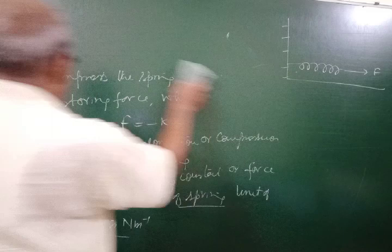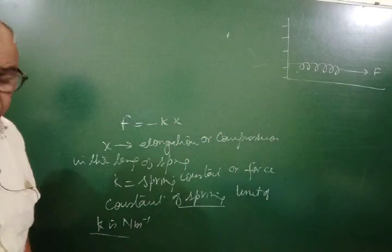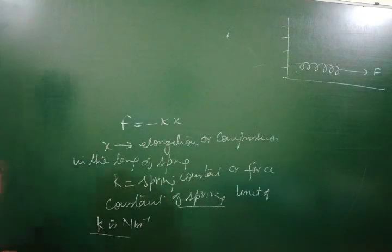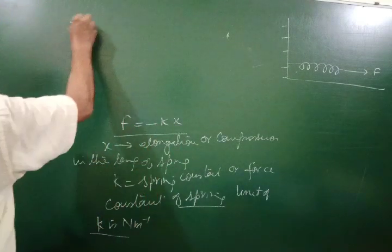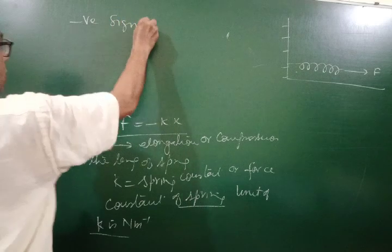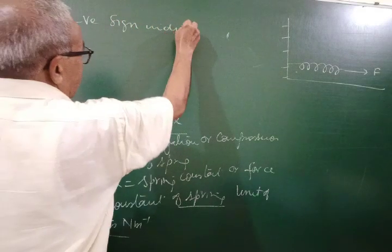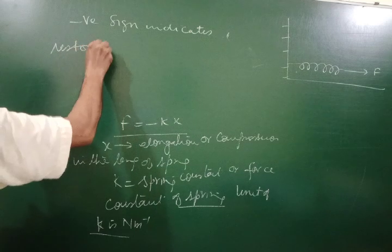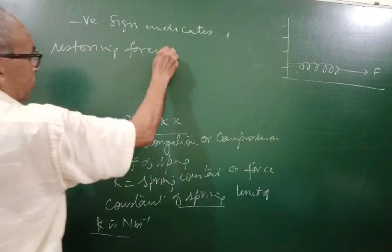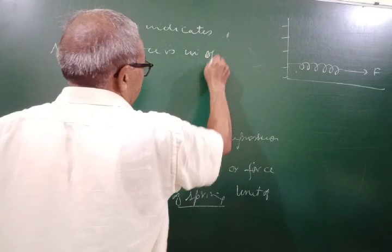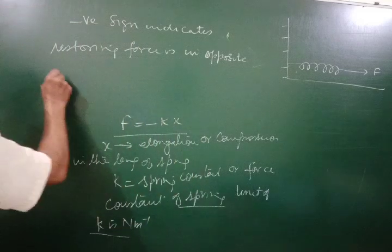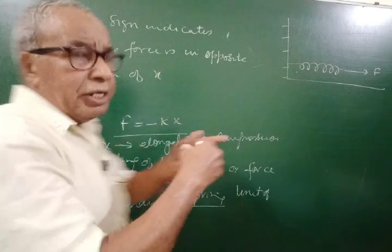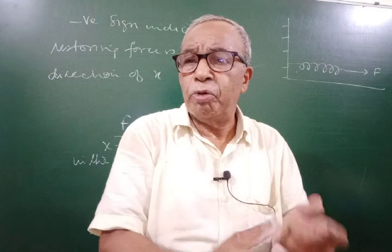For example, if we have two wires — one of copper and one of steel — with the same length and same cross-sectional area, they may have different values of K. The negative sign in F = −Kx indicates that the restoring force is in the opposite direction of x. If we increase the length, force acts inward; if we compress, force acts outward.